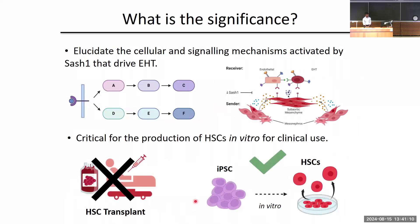In clinical practice, hematopoietic stem cell transplantation remains a primary treatment option for various blood disorders, despite its associated safety concerns and poor reproducibility. By uncovering the cellular and signaling mechanisms behind the emergence of HSCs, researchers aim to generate HSCs ex vivo from induced pluripotent stem cells, offering a promising alternative for treatment. Thank you very much, and I will be at poster number eight.